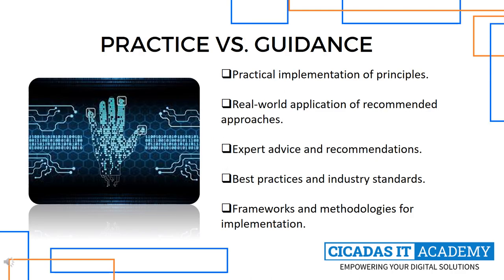In conclusion, practice and guidance are crucial components of cybersecurity governance. Effective practice requires effective guidance, and effective guidance requires effective practice. The two components work together to improve an organization's cybersecurity posture. It is crucial to regularly review and update practice and guidance to ensure they remain effective and align with industry standards and best practices. By prioritizing cybersecurity, organizations can protect themselves from cyber threats and maintain a secure digital environment.